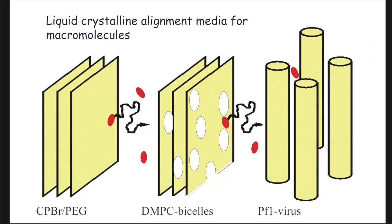The earliest medium used for this purpose is bicelles — phospholipid bilayers with a Swiss cheese morphology, with big holes in them, that align cooperatively relative to the magnetic field. They have large spacing of hundreds of angstroms between them, so a dissolved protein can freely diffuse through this medium and occasionally bounce into one of the walls. We can also use filamentous phages, which also cooperatively align relative to the magnetic field, and the protein diffuses through this labyrinth of columns. The closer the columns, the stronger the degree of alignment — so we can tune alignment strength by changing particle concentration.